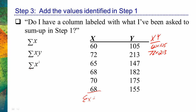For sigma x squared, I want to sum up all the squared x values — that's what I determined in step one. Step two: do I need another column? I don't have a column of squared x values; I have a column of x values. So let's make a column of squared x values: 60 squared, 72 squared, and so forth. Once that work is done, I ask myself in step three: do I have a column labeled with what I've been asked to sum up? I do now — a column of squared x values. I can sum them up.